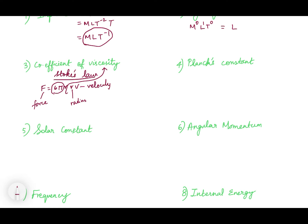We have to find eta, so eta is equal to F divided by r and v. MLT⁻² is for force, divided by radius which has dimension L, and velocity which has dimension LT⁻¹. Now you cancel L — what will be left is ML⁻¹T⁻¹. This is the dimension of the coefficient of viscosity, eta (η).